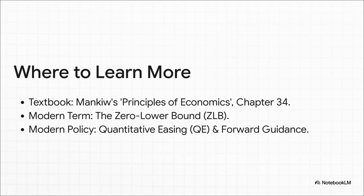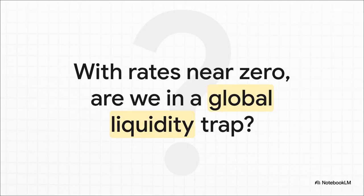Don't think this is just some old, dusty theory from a textbook. The idea of a liquidity trap is everything when it comes to understanding modern economics. We just use a new term for it now — the zero lower bound, or ZLB. It's the whole reason you hear about things like quantitative easing, or QE. Those policies were literally invented to fight the effects of the ZLB after the 2008 financial crisis. These concepts aren't just for acing an exam — they are absolutely essential for making sense of the world around you. The next time you see a headline about central bank policy or a new government stimulus plan, you'll know the deep economic logic behind it all.